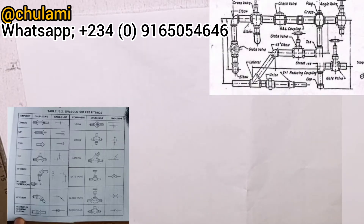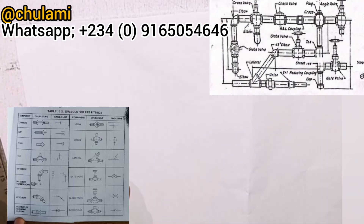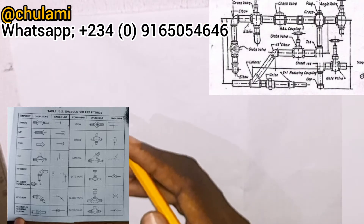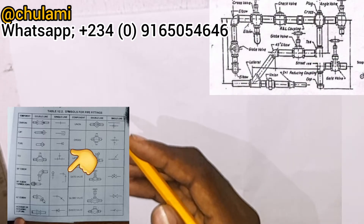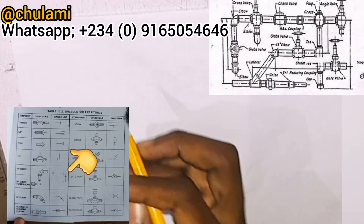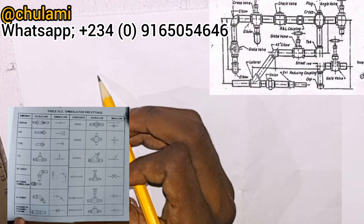Let's start with the first one — the elbow at the extreme right on top. The symbol for a 90-degree elbow is drawn like this.